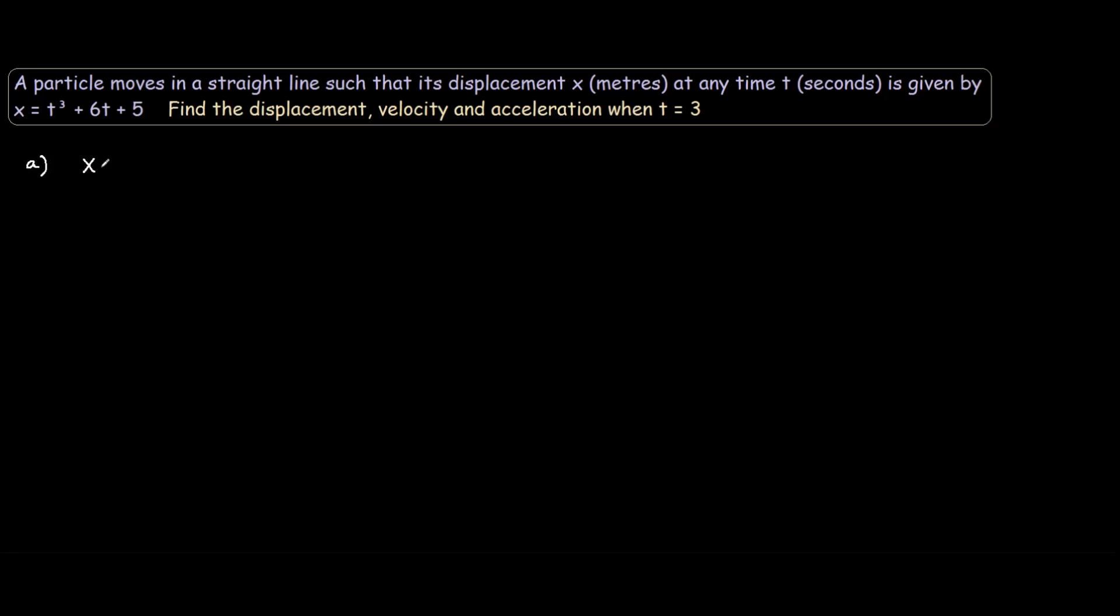So x would equal 3 cubed plus 6 times 3 plus 5. So that's 27 plus 18 plus 5, which would be 50 meters.